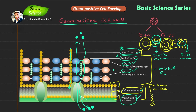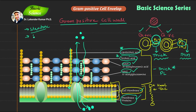I want you to make your own notes covering the major differences between gram positive and gram negative cell wall structure, the ultrastructure of the gram positive cell wall, the function of individual components, the general function of the cell envelope, and the structure of the plasma membrane.